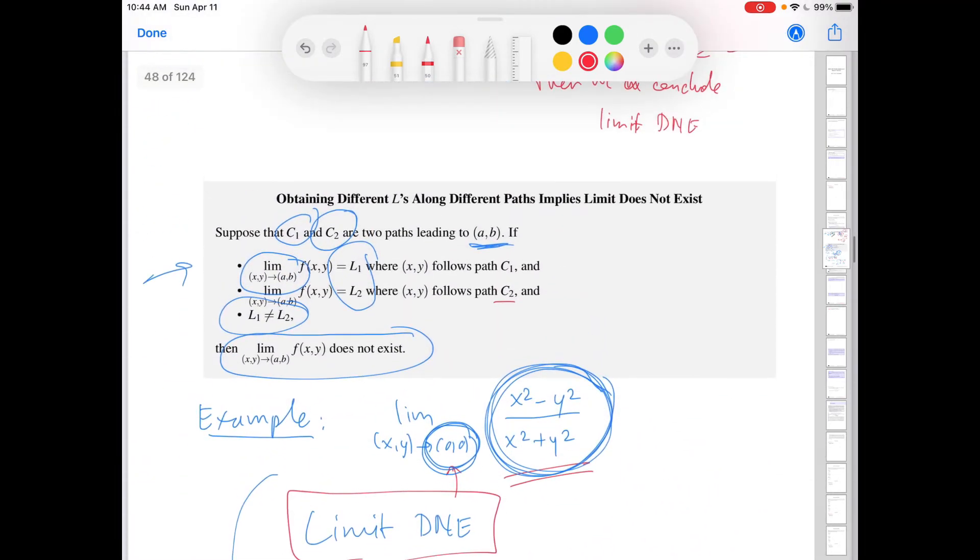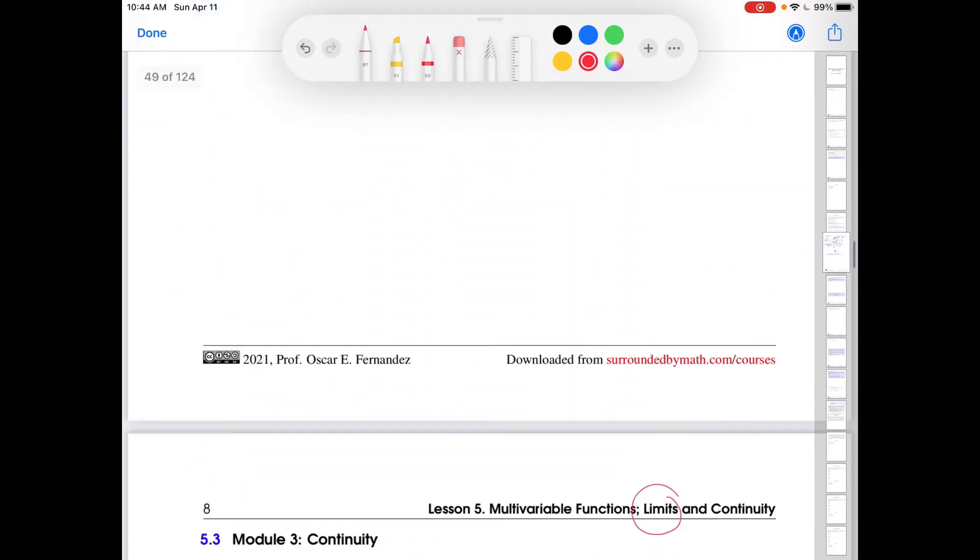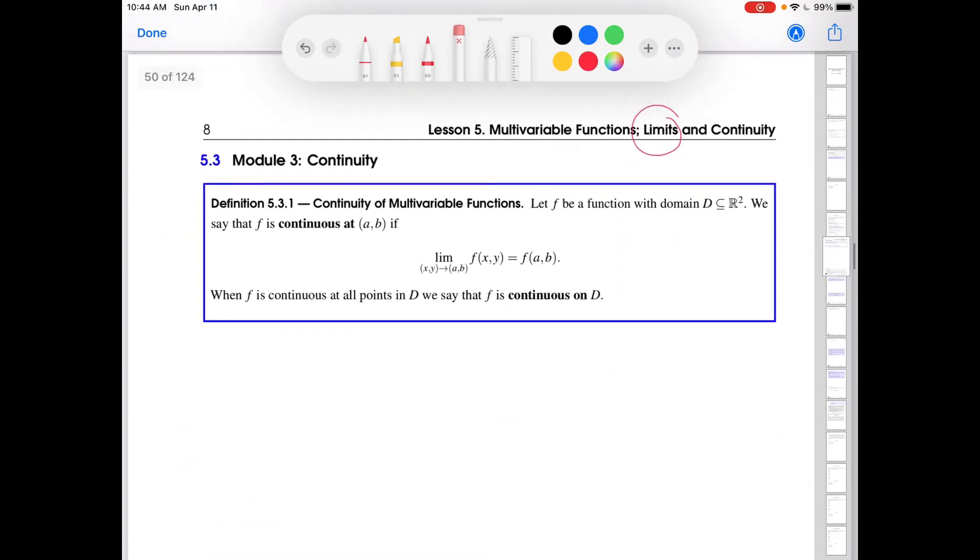In the previous video we talked about how, for example, using this result, if you approach the point you want to calculate the limit at via two different paths and you get two different answers, then the limit does not exist. So in this video we're going to talk about continuity, which is a step up from limits.